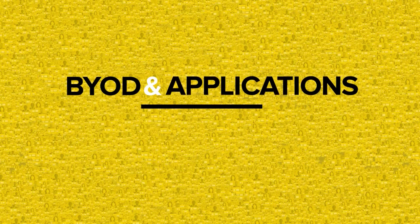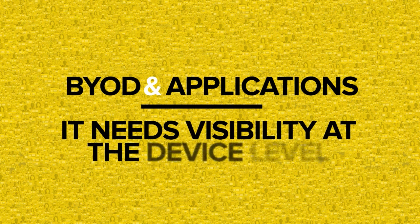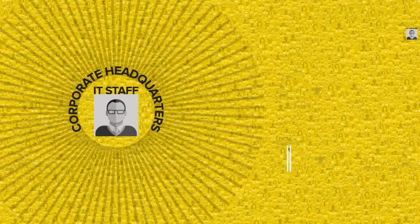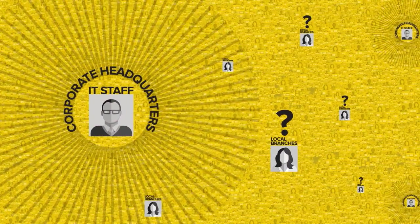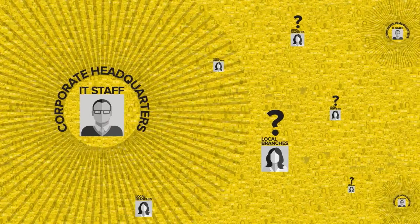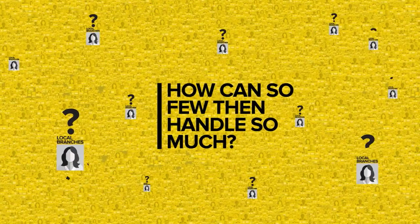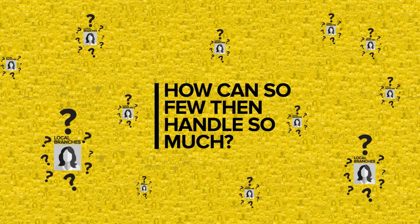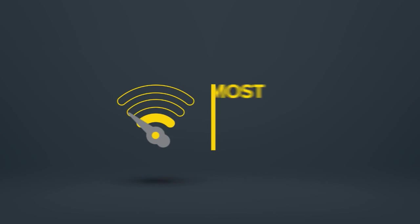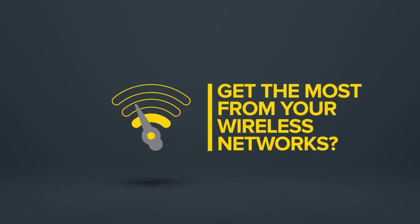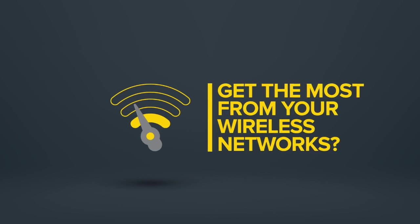With the rise of BYOD and the proliferation of applications in enterprise, IT needs visibility to control applications at the device level. But IT staff is dispersed and spread thin, with most at corporate headquarters and almost none at local branches. How can so few then handle so much? How can your enterprise get the most from your wireless networks that are so critical to your business?